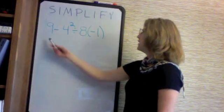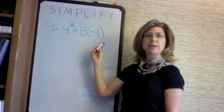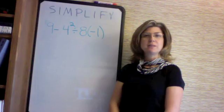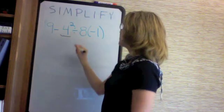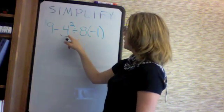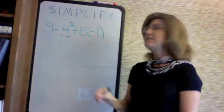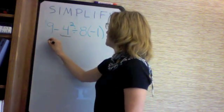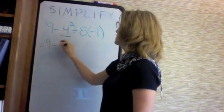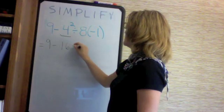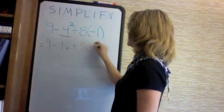Simplify: 9 minus 4 squared divided by 8 times negative 1. We are first going to simplify the exponents. The 4 is raised to the second power — 4 squared is 16. So this equals 9 minus 16 divided by 8 times minus 1.